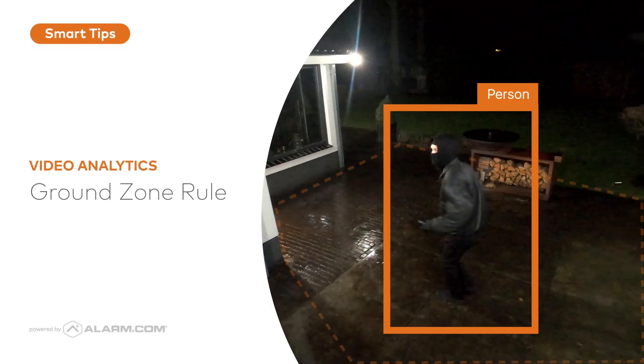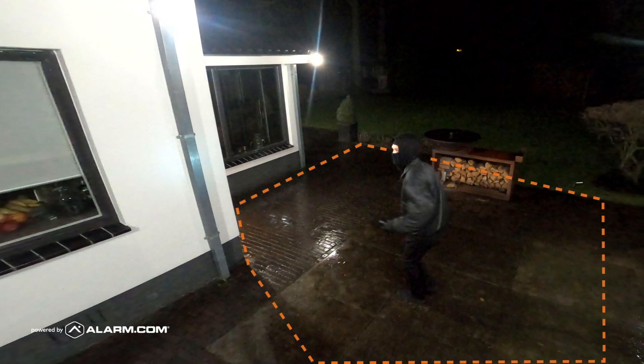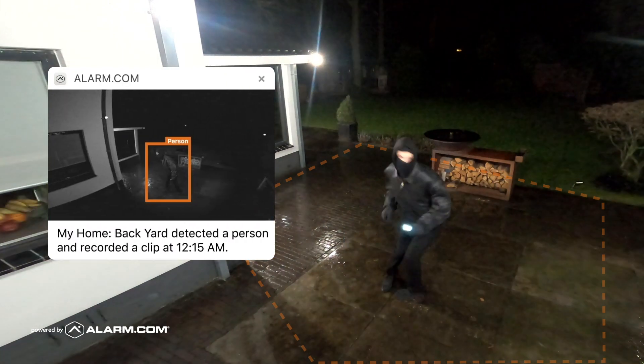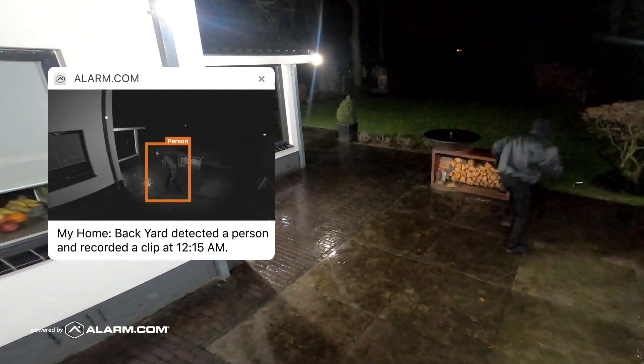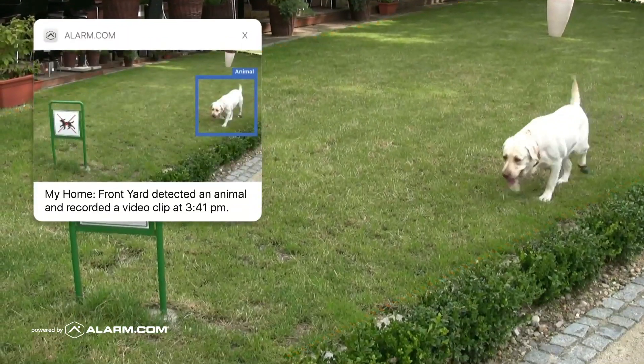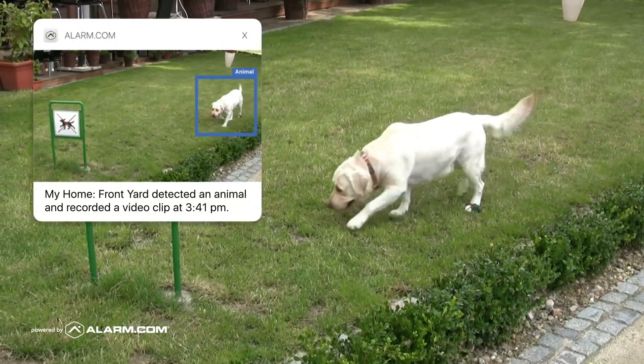Ground Zone Video Analytics rules are best used for capturing loitering in a specified area. For example, a person loitering near your back door, or an animal in your front yard.